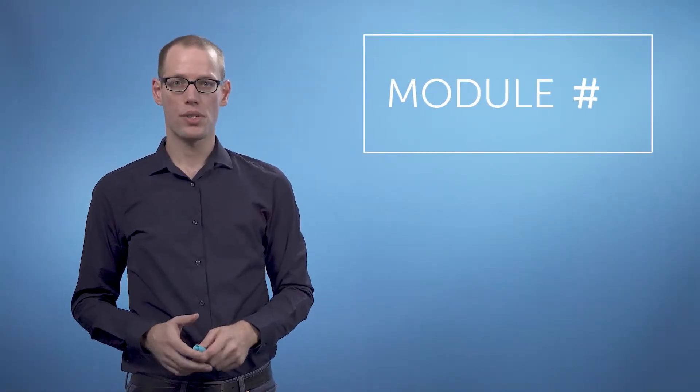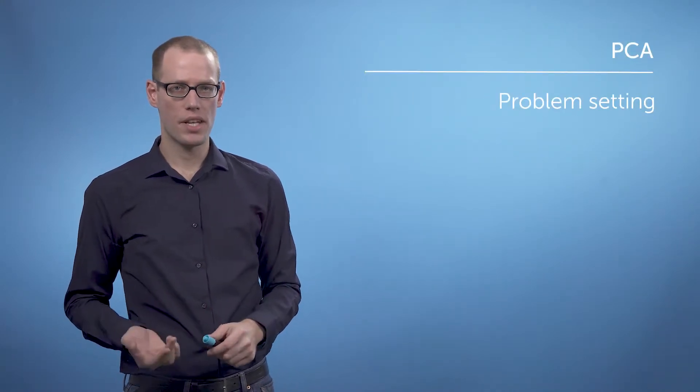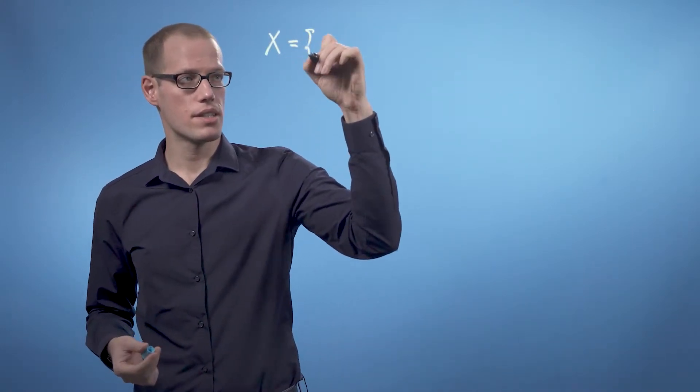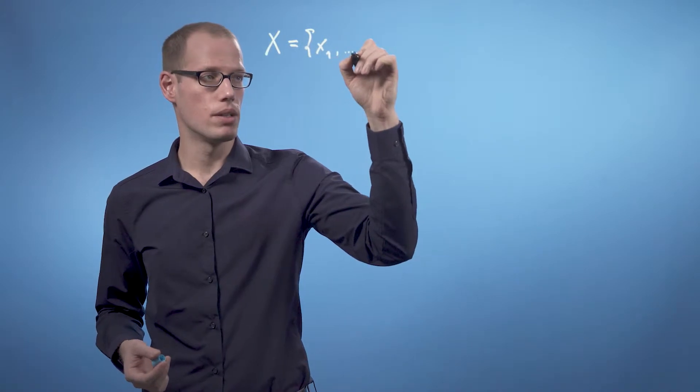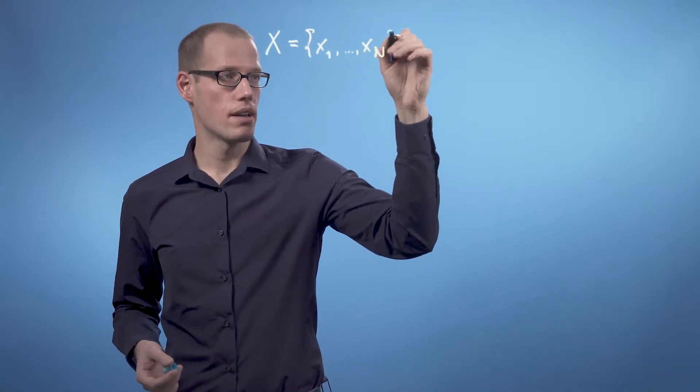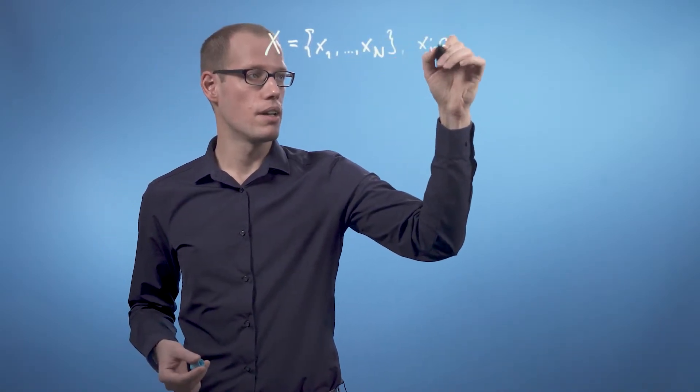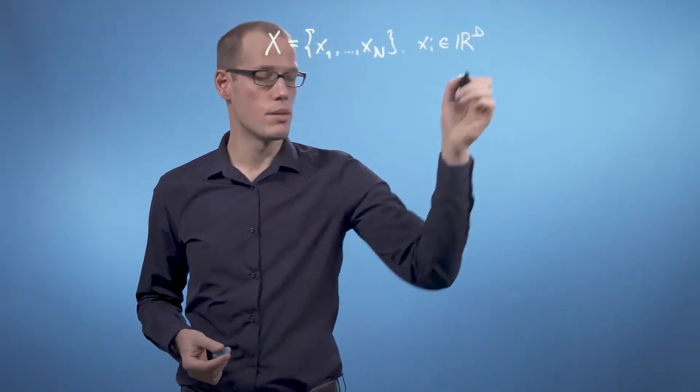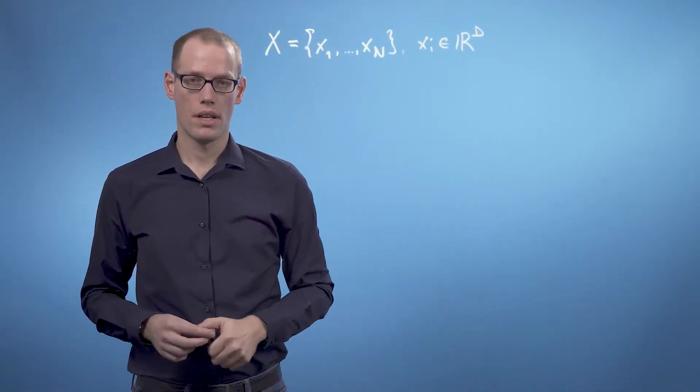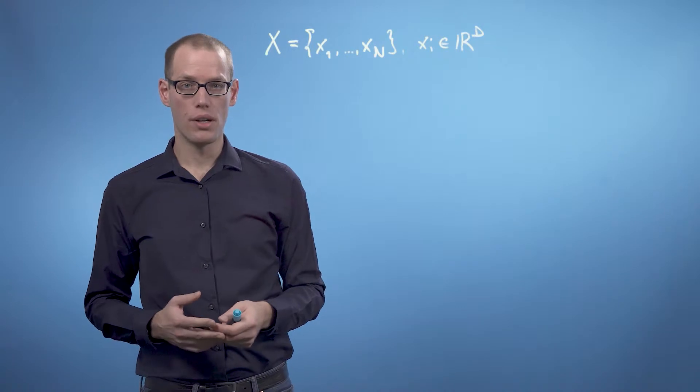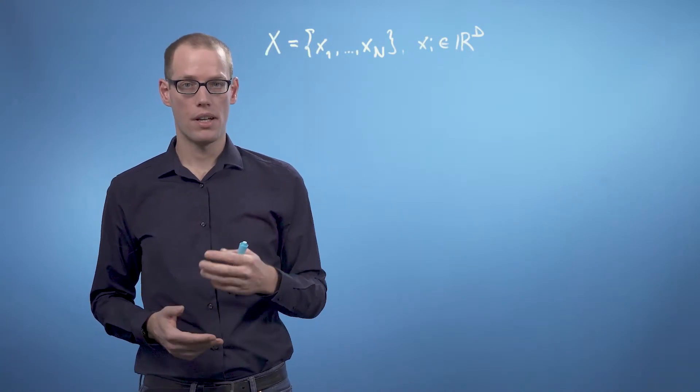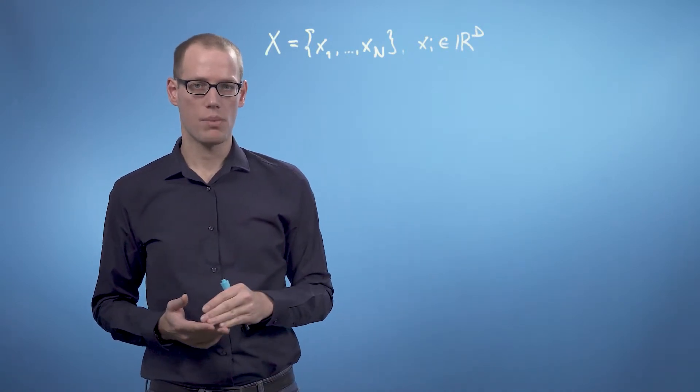In this video we will introduce the setting of PCA and the high-level idea. Assume we have a data set X in R^d consisting of n vectors, so X is a data set and we have n vectors X_1 to X_n where the X_i are d-dimensional vectors. Our objective is to find a low-dimensional representation of the data that is as similar to X as possible.